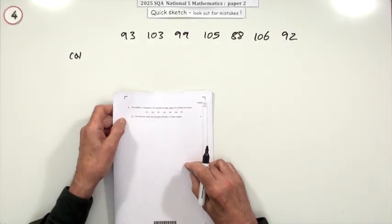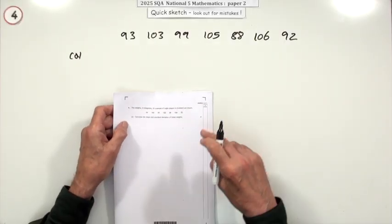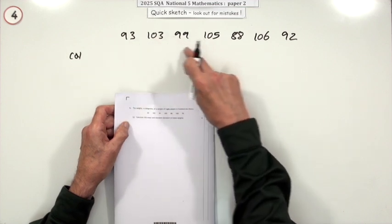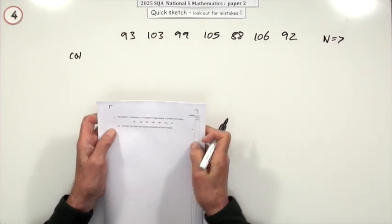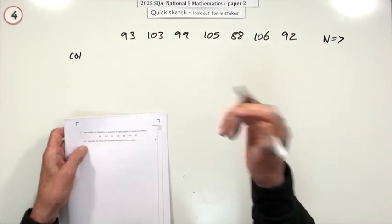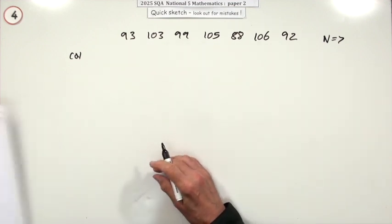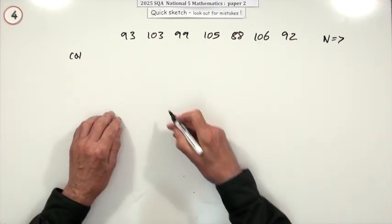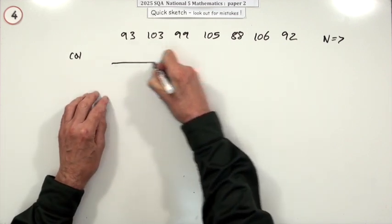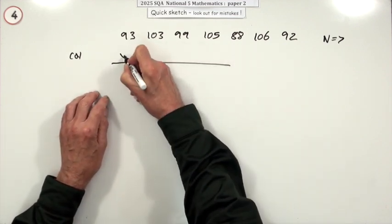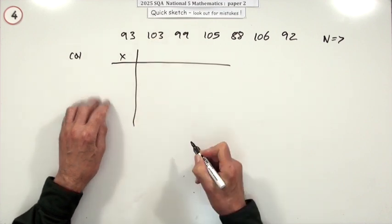Number four now. The weights in kilograms of a sample of rugby players in Scotland are shown. So you've got these. We're going to do the dividing. Seven weights here. N equals seven. Calculate the mean and standard deviations. That'll be the little table then. Now you've got two formulae. But you can start your table off the same for both of them.